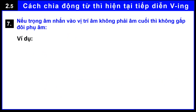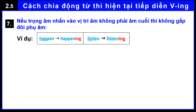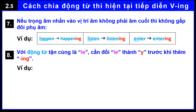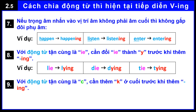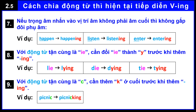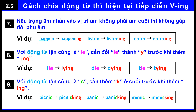Rule 7 — for example: happen → happening, listen → listening, enter → entering. Rule 8 — for example: lie → lying, die → dying, tie → tying. Rule 9 — for example: picnic → picnicking, panic → panicking, mimic → mimicking.